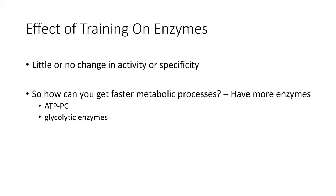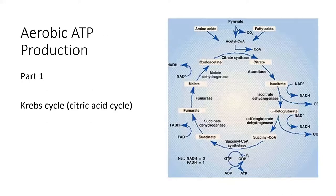We can also train these energy systems. You can get faster at using anaerobic energy systems by having more enzymes available or more phosphocreatine within your muscle cell, allowing that system to last slightly longer. Enzyme availability will help speed up those reactions, and this comes through training. Now let's move into aerobic ATP production.